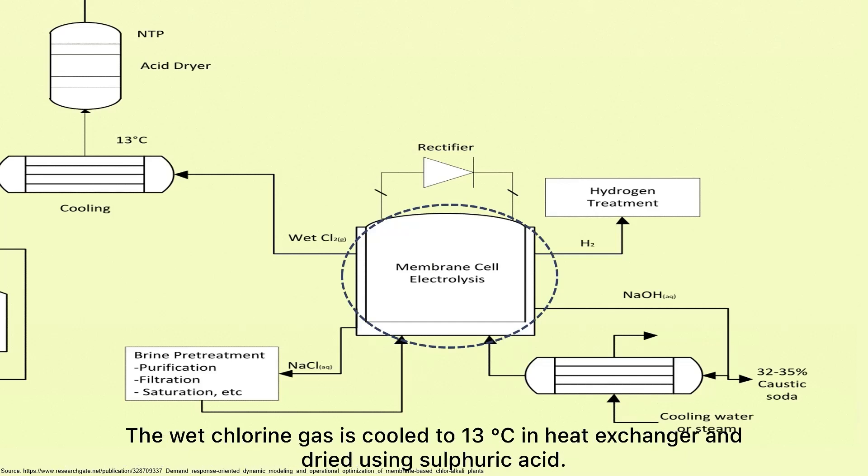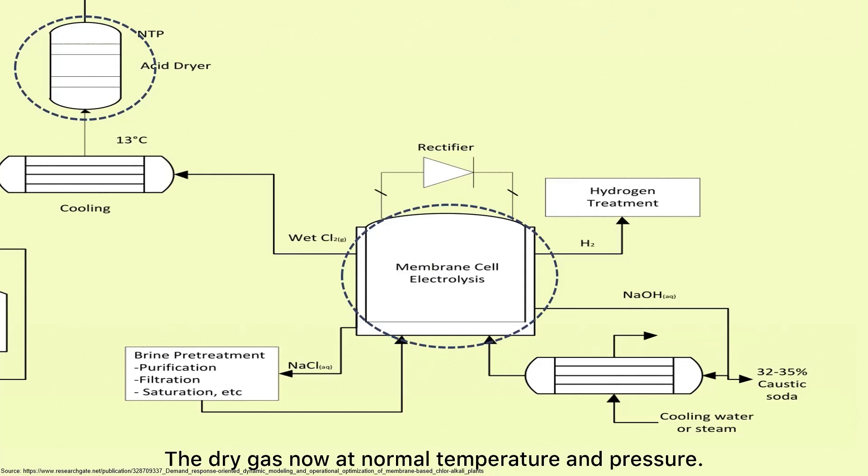The wet chlorine gas is cooled to 13 degrees Celsius in heat exchanger and dried using sulfuric acid. The dry gas is now at normal temperature and pressure.